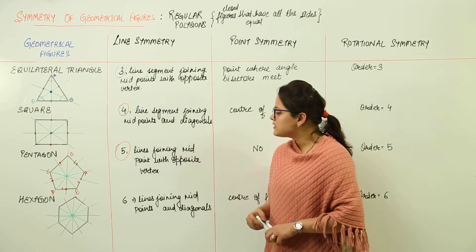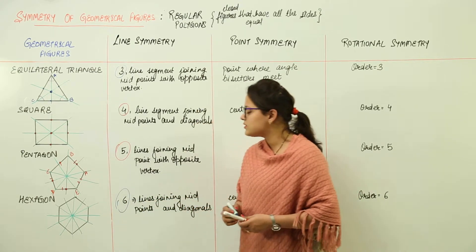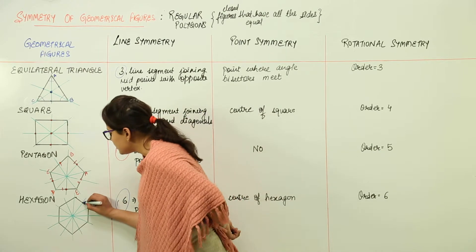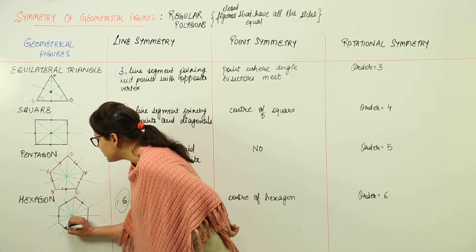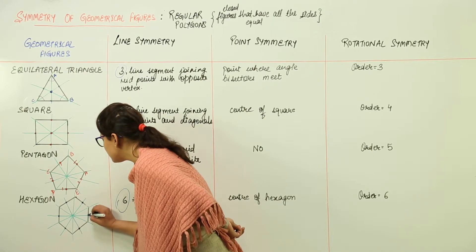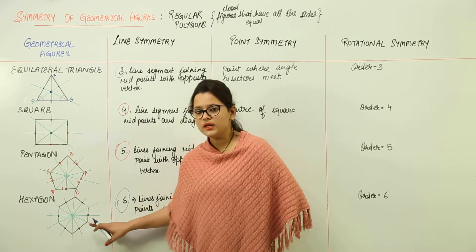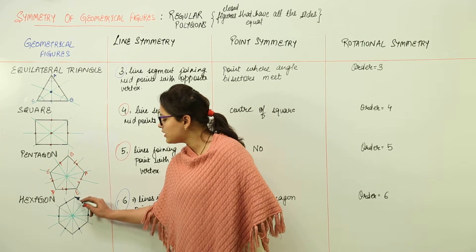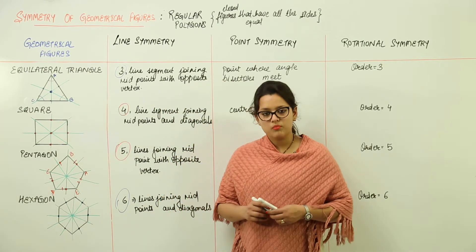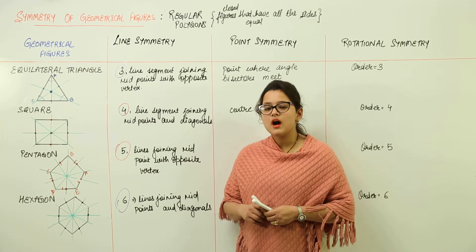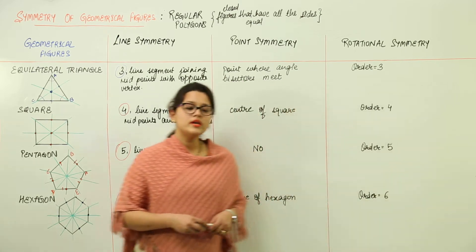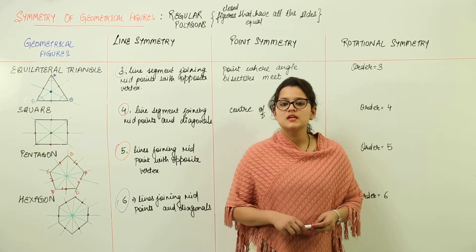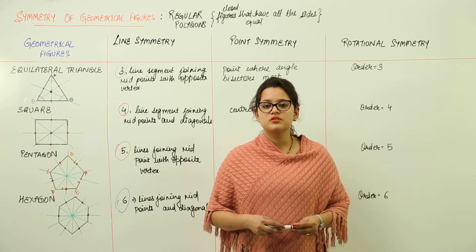Next we have the hexagon. A hexagon has 6 lines of symmetry — the lines joining the midpoints and the diagonals. Since it has all sides equal, it has midpoints on each side, and the opposite midpoints are joined. There are also diagonals joining opposite vertices. The point of symmetry for the hexagon is its center, and the rotational symmetry is order 6, because it can be rotated 6 times to return to its original position.